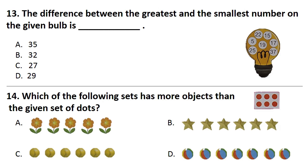Question No. 13. The difference between the greatest and the smallest number on the given bulb is? Answer is Option B. That is 32.